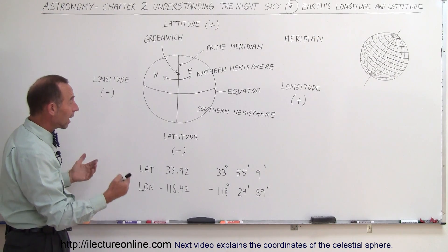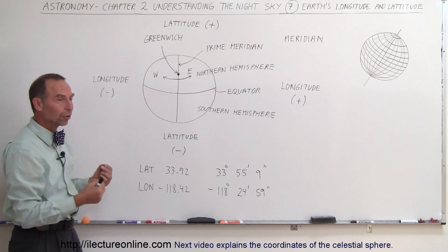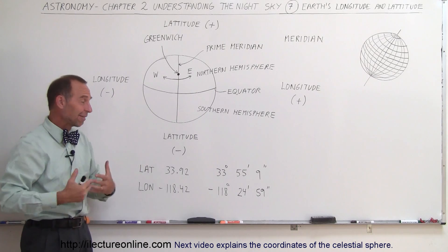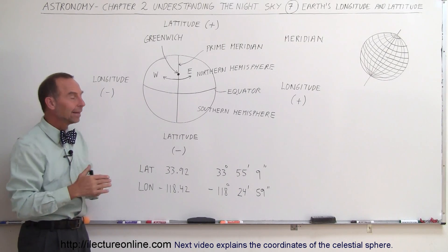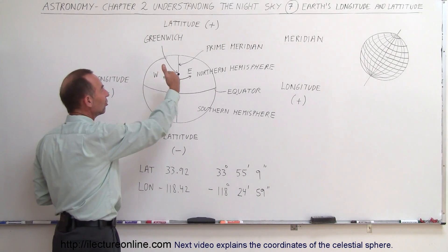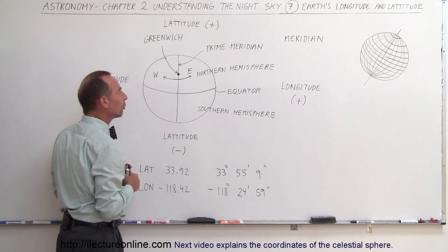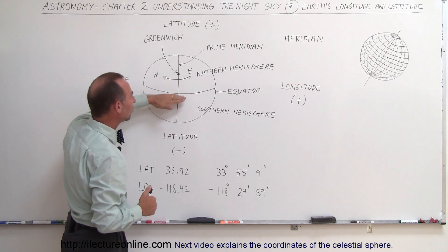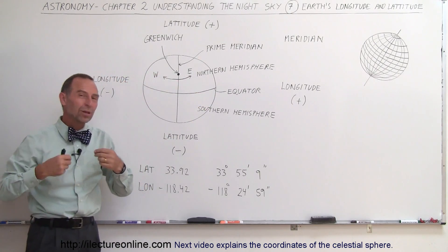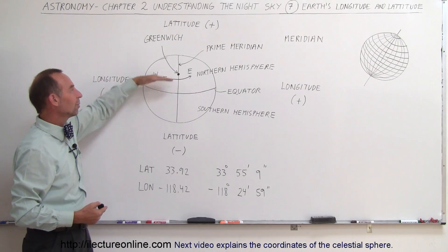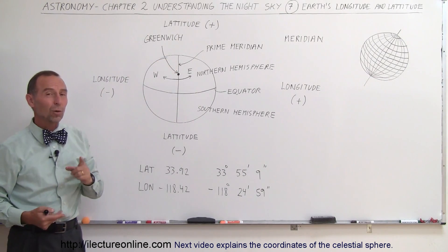That allows you to find any location on the Earth. For the celestial sphere, we have to have a similar technique. For the position above and below the celestial equator, we can follow the same kind of system. We can say so many degrees above, so many degrees below.